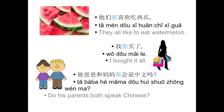Here are some examples. 她们都喜欢吃西瓜 — They all like to eat watermelon. 我都买了 — I bought it all. 她爸爸和妈妈都会说中文吗？ — Do his parents both speak Chinese?